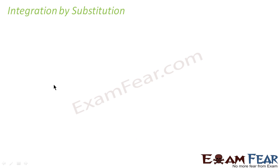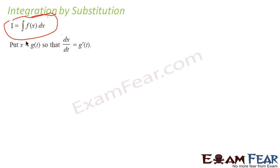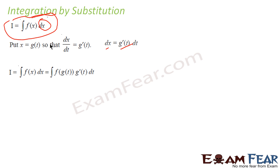Let's understand what integration by substitution is. If I have a function I equal to the integral of f(x) dx, to find this value we put x equal to g(t), some function, such that dx/dt is g'(t). So dx is nothing but g'(t) dt. This dx I can replace with g'(t) dt, and f(x) becomes f(g(t)).